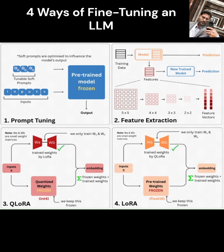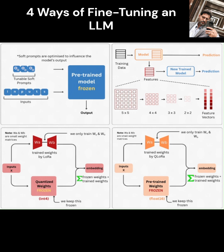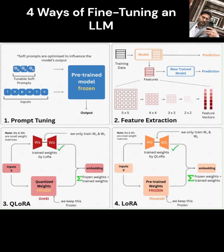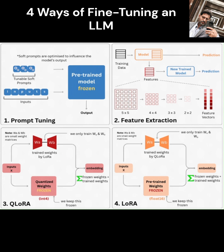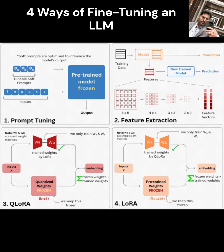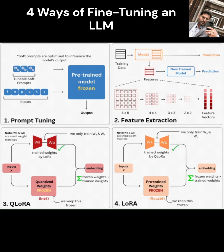Next, we have feature-based fine-tuning, also called a linear probe. Imagine the LLM is like a machine that processes your text and pulls out all the important underlying ideas or features. In this method, we freeze the main part of that machine — the backbone — so it doesn't change. We then pass all our specific data through at once. As the data goes through, we capture those rich, hidden features that the model extracts at a certain layer. Then we add a small, lightweight head on top — usually just a simple layer of connections, like a linear layer — and train only this tiny new head to take those captured features and map them to the specific outputs we want, like classifying text into categories, ranking items, or giving a score.